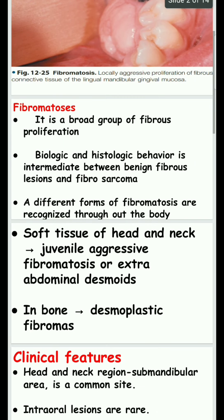Different forms of fibromatosis are recognized throughout the body. In the soft tissue of the head and neck it is called juvenile aggressive fibromatosis or extra-abdominal desmoid. In bone it is called desmoplastic fibromatosis.